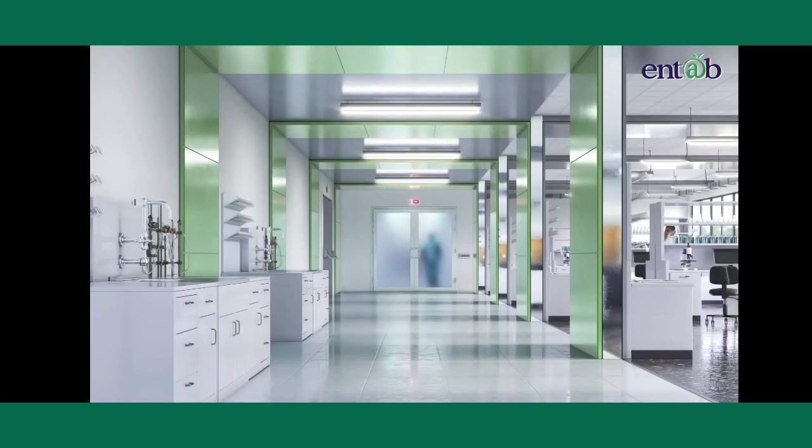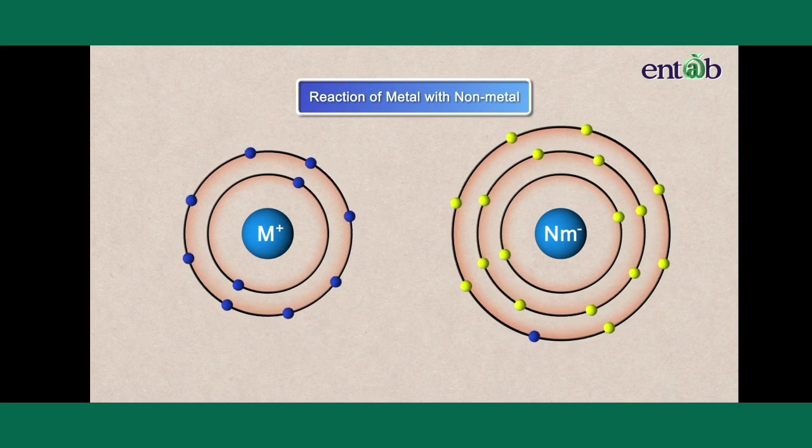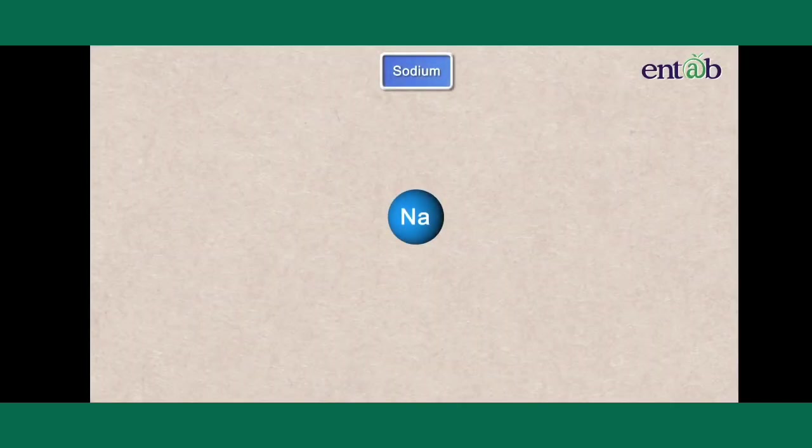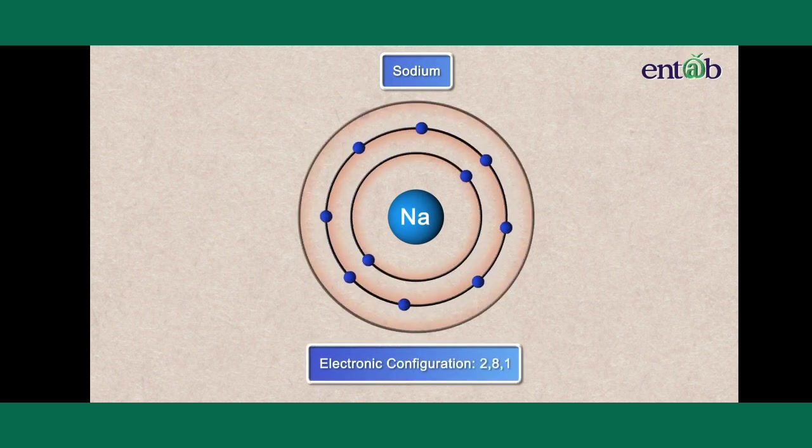Now, let us learn about the reaction of a metal with a non-metal that is sodium with chlorine or the formation of sodium chloride. The electronic configuration of sodium is 2,8,1.